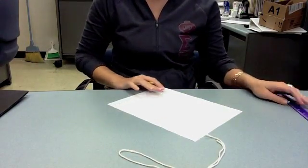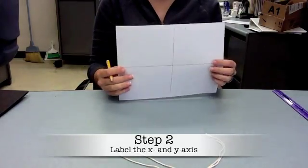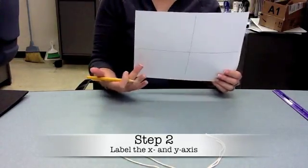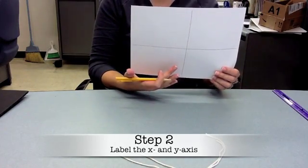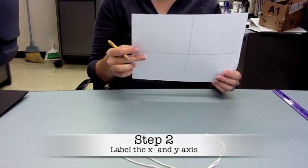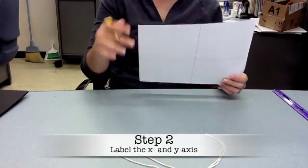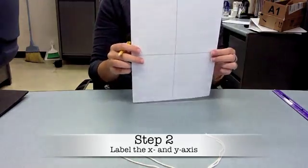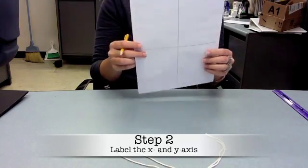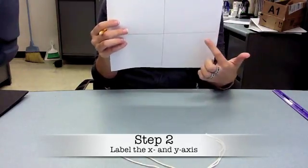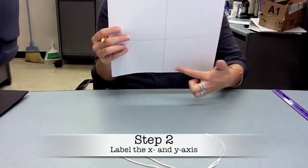After drawing the x and y-axis, you want to label them. I can label this as my x-axis or this as my x-axis. If this was my x-axis, then my paper should be turned this way. I'm going to label this as my x-axis and this as my y-axis.